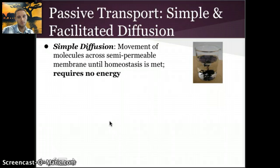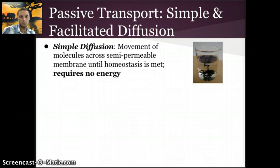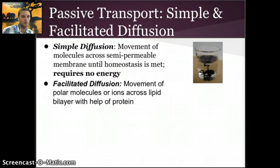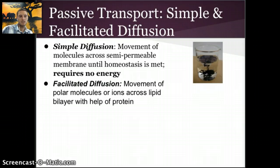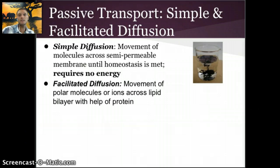Another example of simple diffusion would be adding dye or food coloring to a liquid — eventually it spreads so the whole liquid has that color. A second form of passive transport is facilitated diffusion: movement of molecules from areas of high concentration to low concentration with no energy required. However, because of the polarity of certain molecules, or because they are charged ions, they can't move across the phospholipid bilayer on their own and need a facilitator.